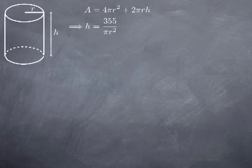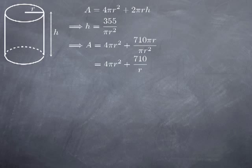We substitute the expression for h in terms of r into our surface area formula. We get 4πr² + 2 × 355/(πr²) × πr, which simplifies to 4πr² + 710/r. The π and one factor of r cancel in the fraction, giving us A(r) = 4πr² + 710/r.